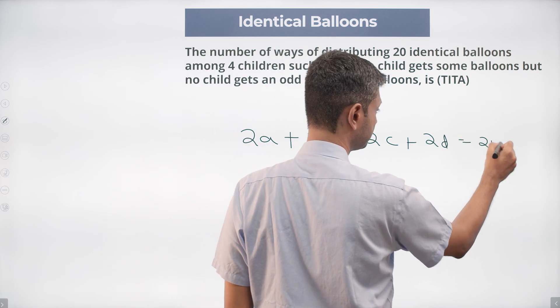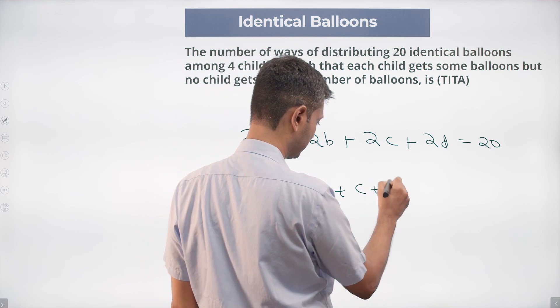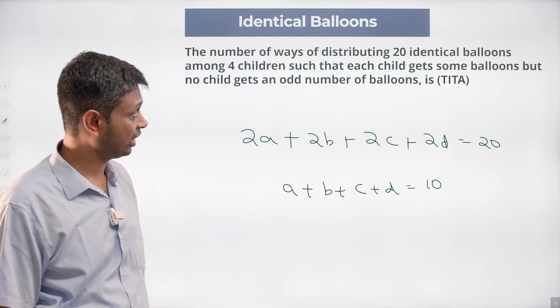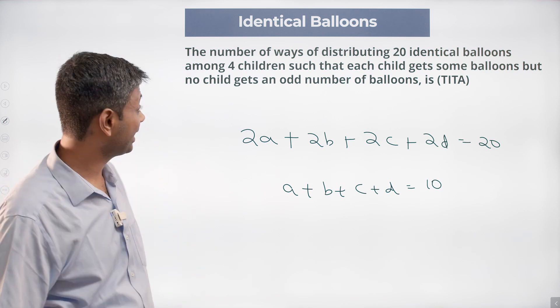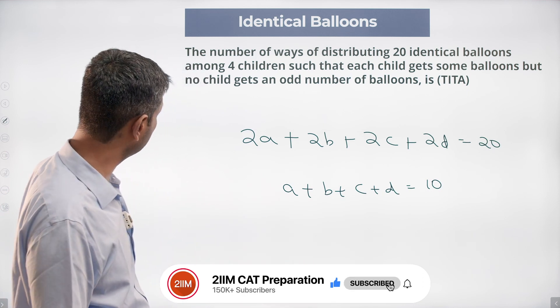Or a plus b plus c plus d is 10. a, b, c, d are number of balloons, and each child gets some number, that is nobody gets zero - natural numbers, four natural numbers adding up to 10.